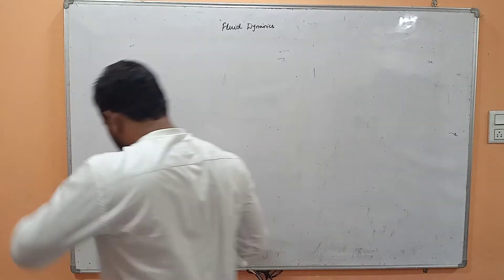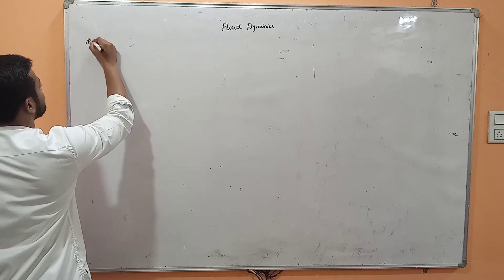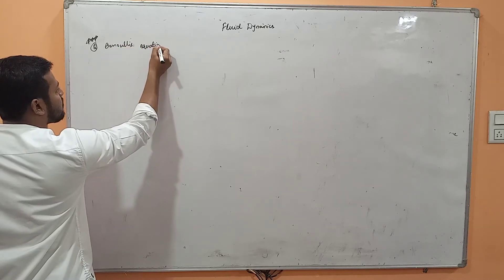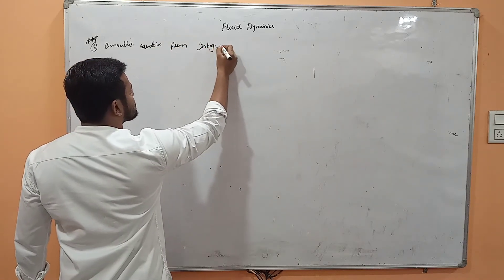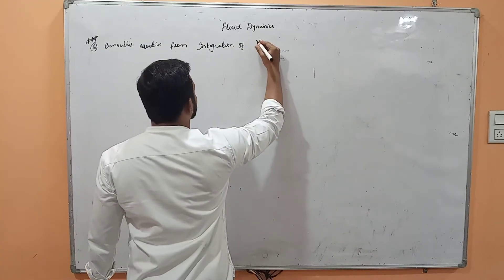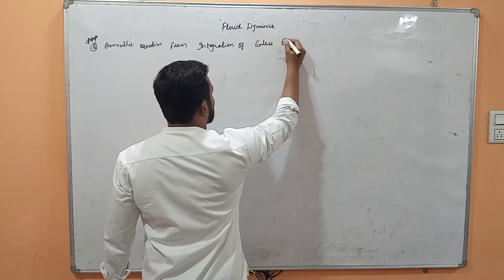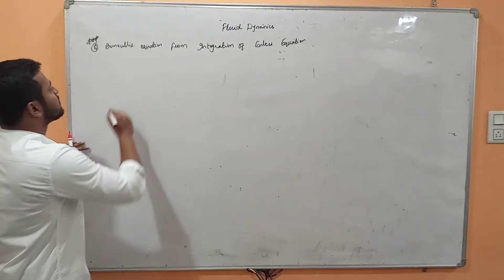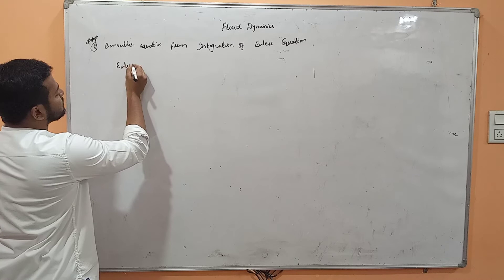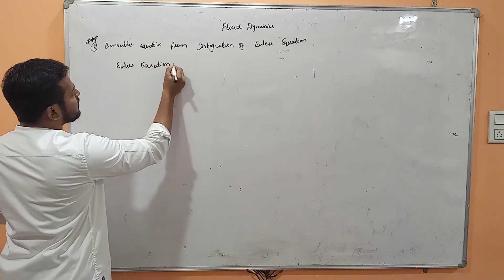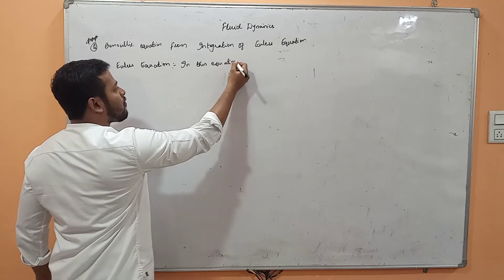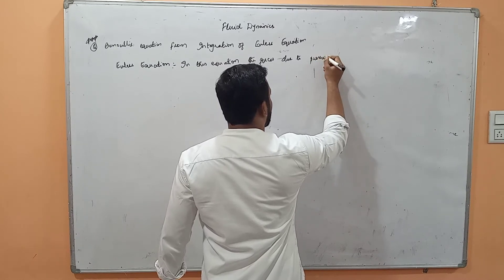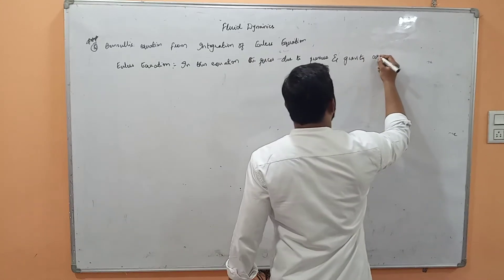The next and very important derivation (three stars) is Bernoulli's equation, obtained by integration of Euler's equation. First we derive Euler's equation, then integrate it to obtain Bernoulli's equation. In this equation, the forces due to pressure and gravity are taken into consideration.